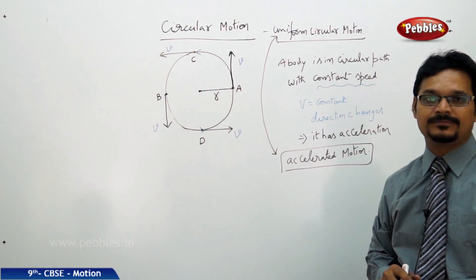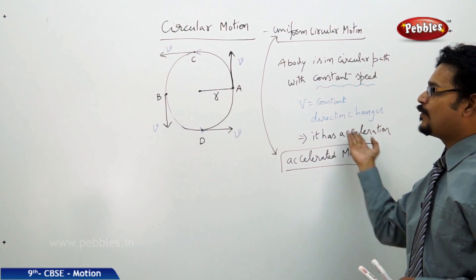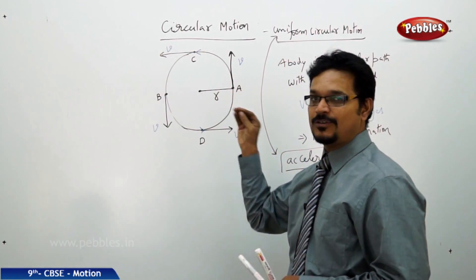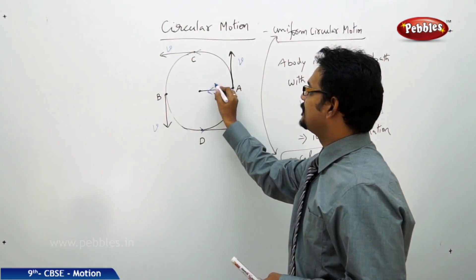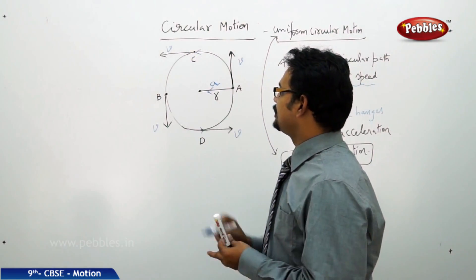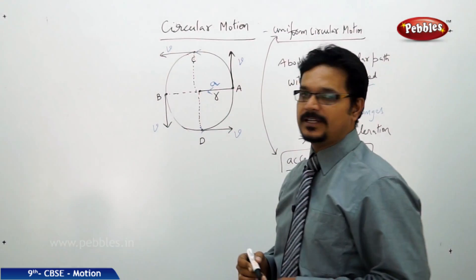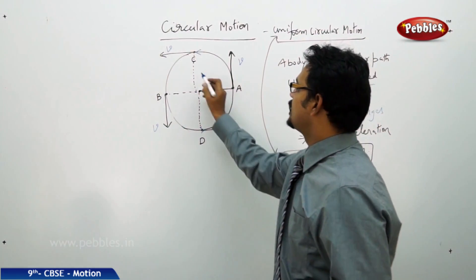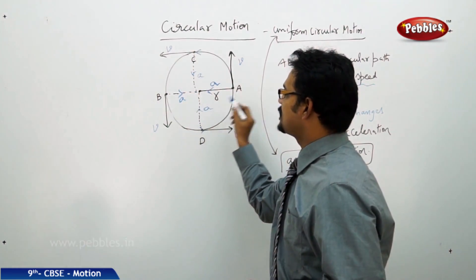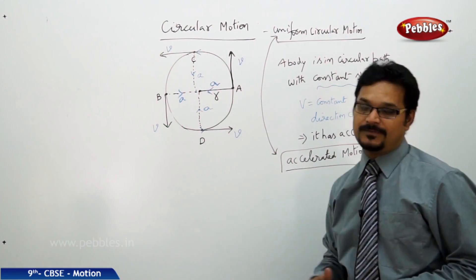We understood about the direction of velocity. When I mention accelerated motion it has acceleration, so what is the direction of acceleration? Because acceleration is a vector, see the diagram carefully — acceleration is always towards the center. If you draw a line, these are the radii of the circle, and the acceleration is always directed towards the center.